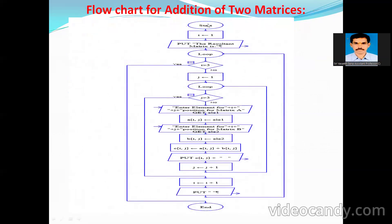This is the flowchart of addition of two matrices. I is initialized to 1, and when I is greater than 3 the loop ends. I am reading a 3×3 matrix — reading A[i,j] then B[i,j]. After reading, I add the corresponding values: C[i,j] = A[i,j] + B[i,j]. Then j is incremented by j+1 for the inner loop, and i is incremented by i+1 for the outer loop.